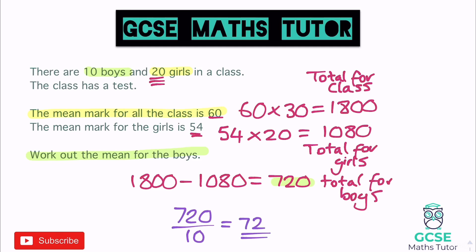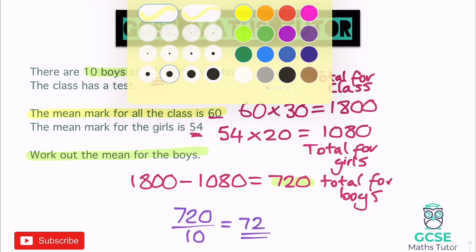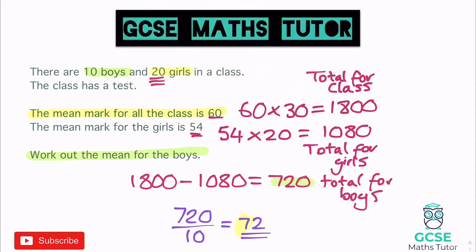720 divided by 10 gives us a mean of 72. There's our final answer. We worked backwards through the question, multiplying the means by the amounts to get the totals, then used logic to find the total for the boys, and finally worked out the mean as normal.